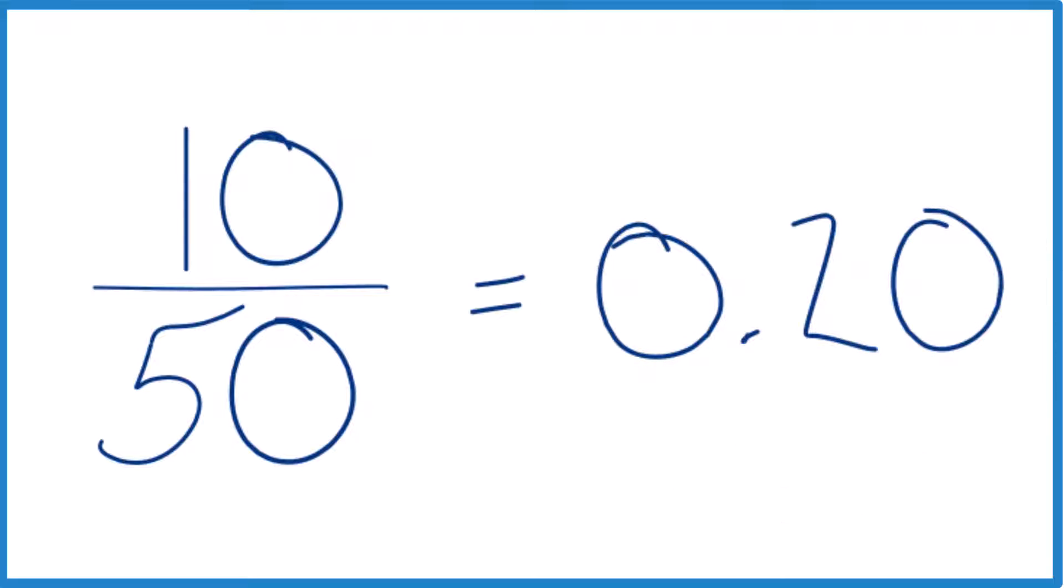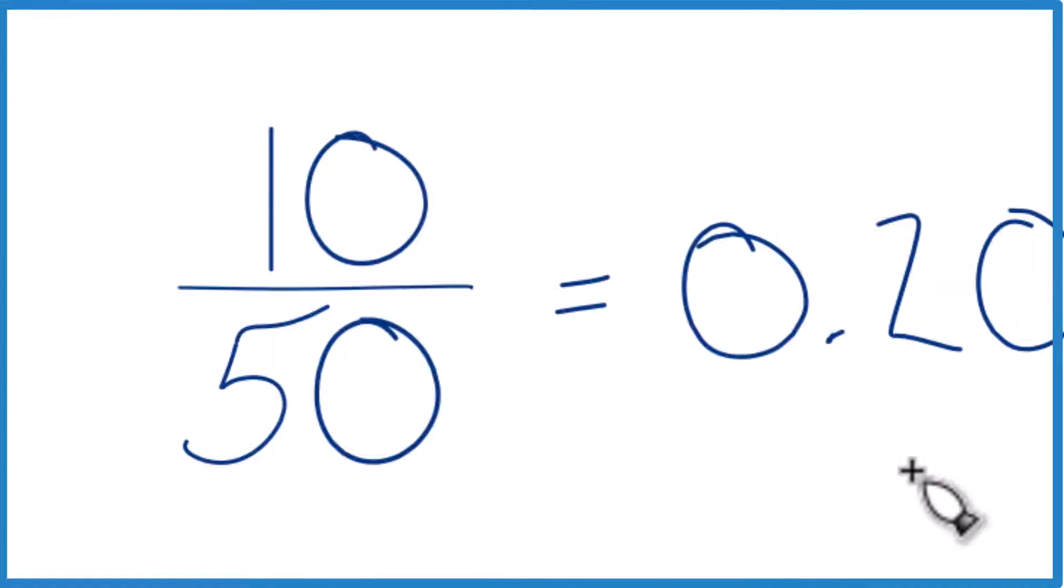So that's the first way. You could call that 0.2 as well. The second way is we could do this by simplifying our fraction to start out with, because 10 goes into itself and 50 evenly. So 10 divided by 10,